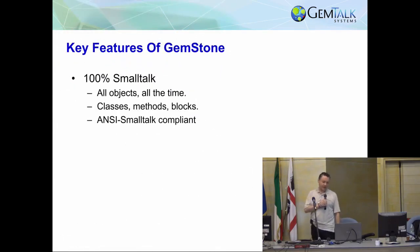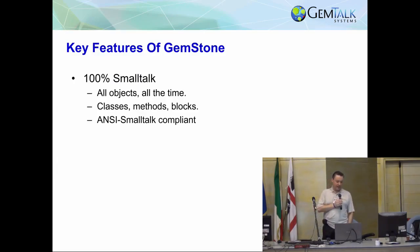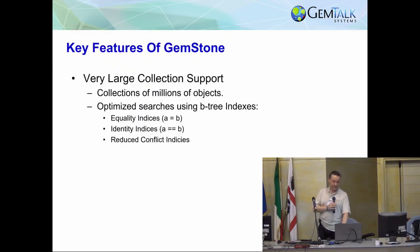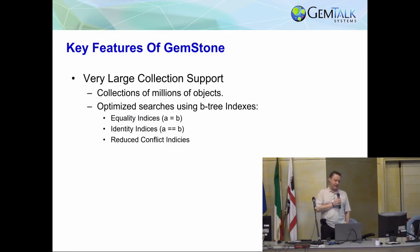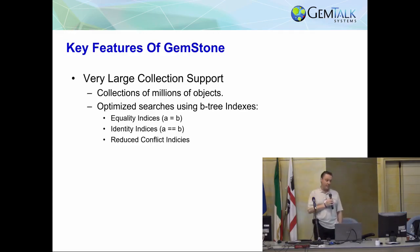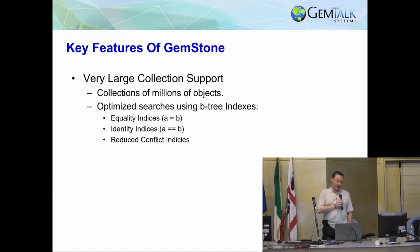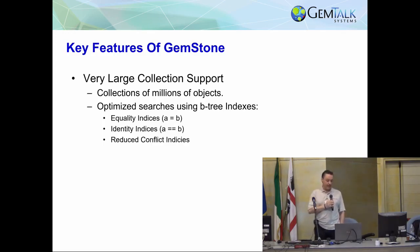GemStone is 100% Smalltalk. It's turtles all the way down — all objects all the time. ANSI Smalltalk combined with a few exceptions. Classes, methods, blocks — all the Smalltalk stuff that you know and love. We support very large collections: millions, tens of millions, hundreds of millions of objects. Searches can be indexed, so you can search by equality or identity on instance variables of objects in the collection. We also have reduced-conflict indices, which are designed to avoid commit conflicts when indexed collections get updated.